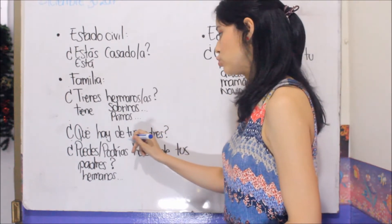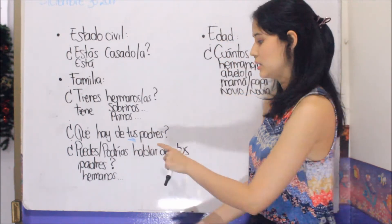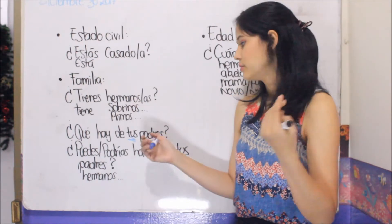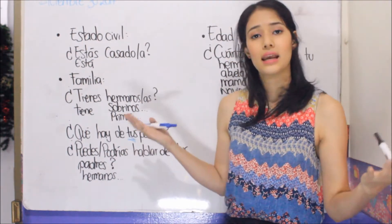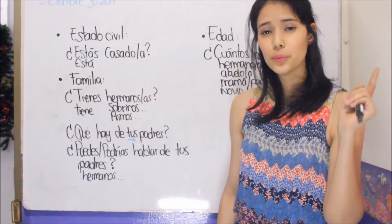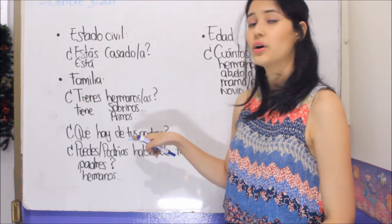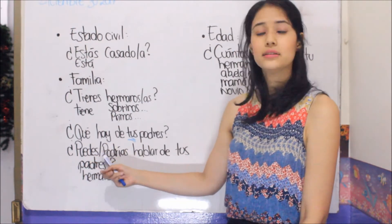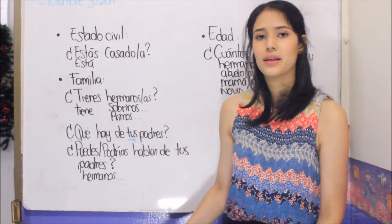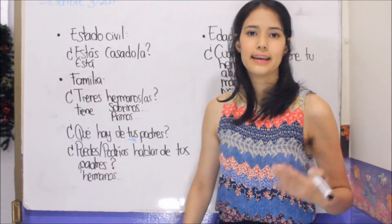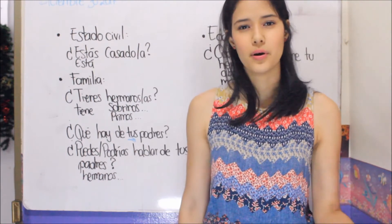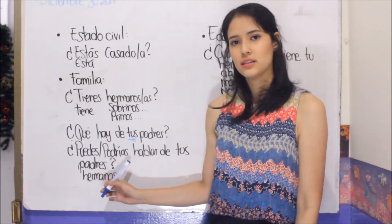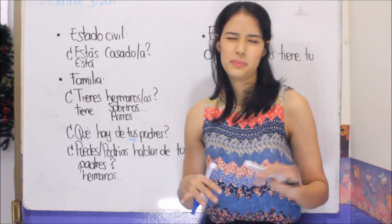Notice here the possessive 'tus' — why do we use 'tus'? Because the noun that follows is plural, and in Spanish you need to make agreement in number. If you put a word in plural, you have to put the other words in plural too. You can also ask: '¿Puedes o podrías hablar de tus padres, hermanos?' If you use 'puedes', it is like 'can you?' And 'podrías' is like 'could you speak about your parents, your brothers, your sisters?' So 'podrías' is more formal and 'puedes' is more informal but normal.